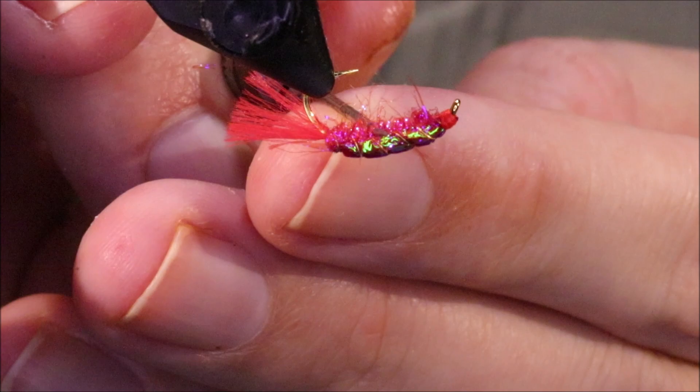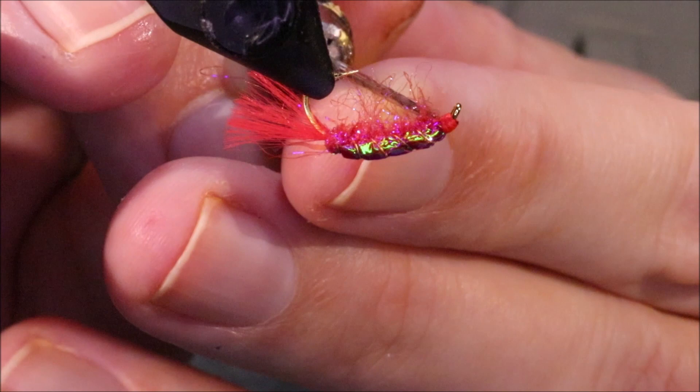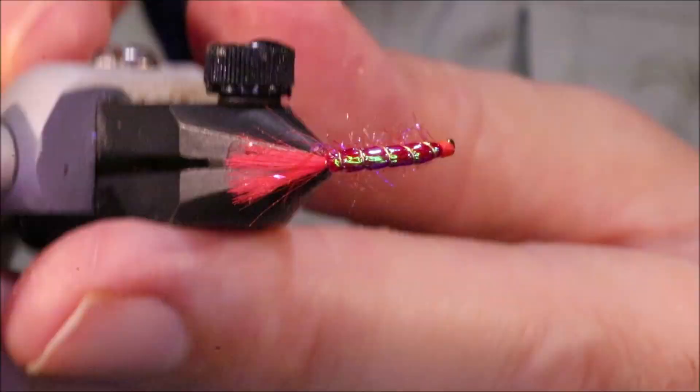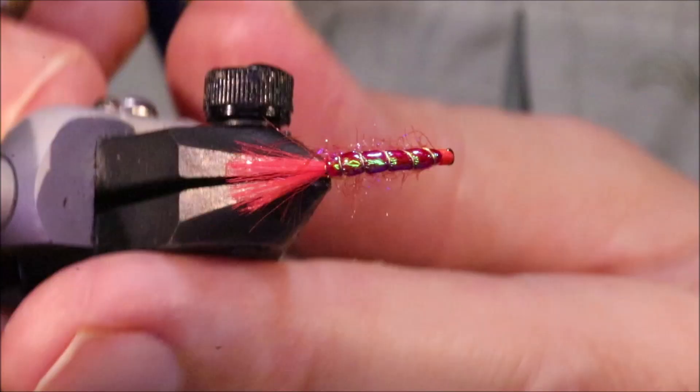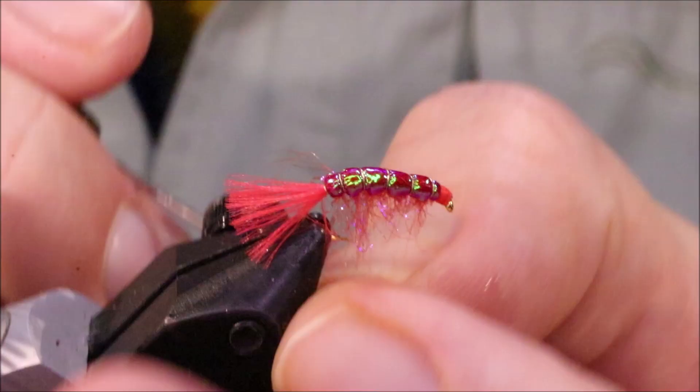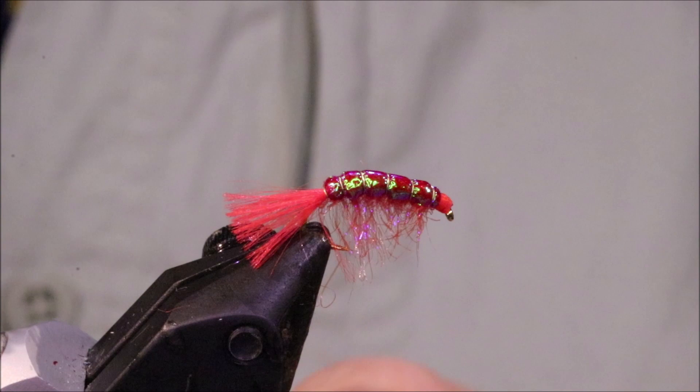And then I'm going to come in with my dubbing needle and get this picked out right along the bottom. Give me some wee legs and a bit of movement in the fly. You can rub it with velcro, but I think you kind of free the fibres better with the needle, actually. And I'll just stroke everything down.